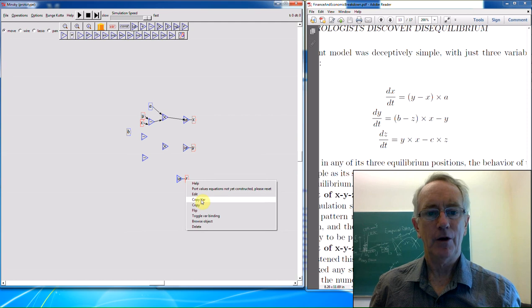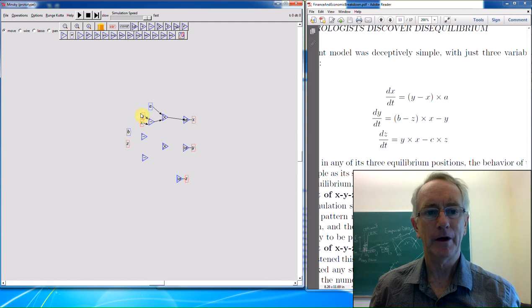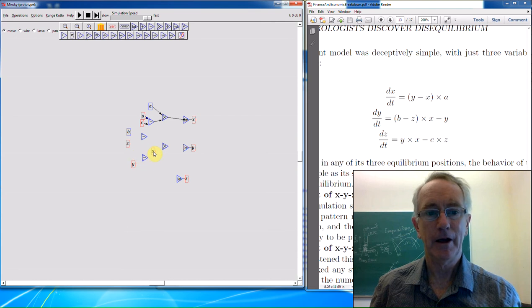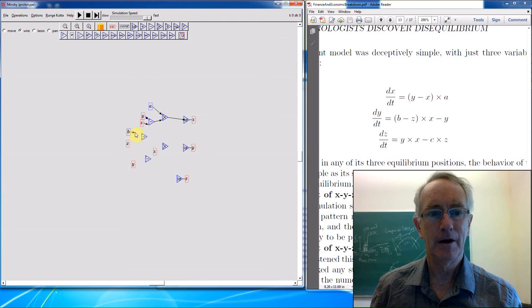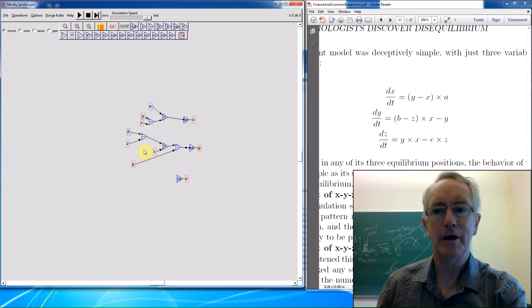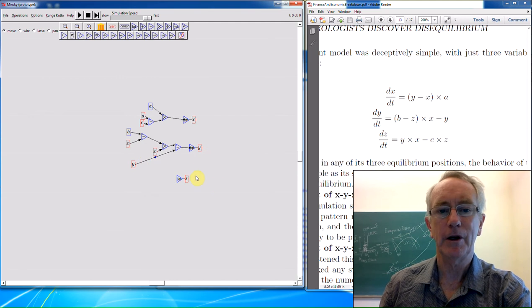And now I've got the basics for designing the equation for x. So I'm going to have y minus x multiplied by a, integrated is x. So that's the first equation. The next two are just as simple, so let's go through that. So we have y is the integral of b minus z multiplied by x minus y. So again, I need a multiply block.